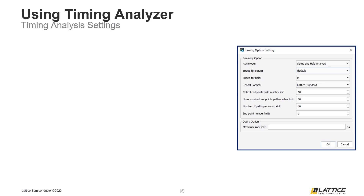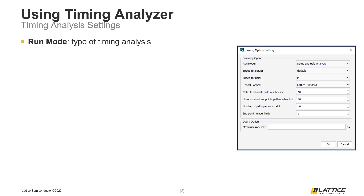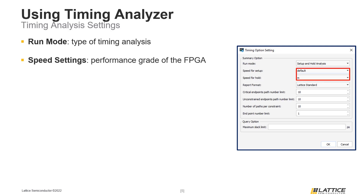The first option in the Timing Option Setting window is Run Mode, which controls the type of timing analysis being performed. By default this will be set to Setup and Hold; however, either Setup or Hold can also be selected from the drop-down. The second and third options, Speed for Setup and Speed for Hold, correspond to the performance grade of the FPGA being analyzed. By default, these are set to M, which corresponds to the fastest possible speed grade. The next option is Report Format, which can be used to select how Timing Analysis reports are displayed — either Lattice Standard or Diamond Style.